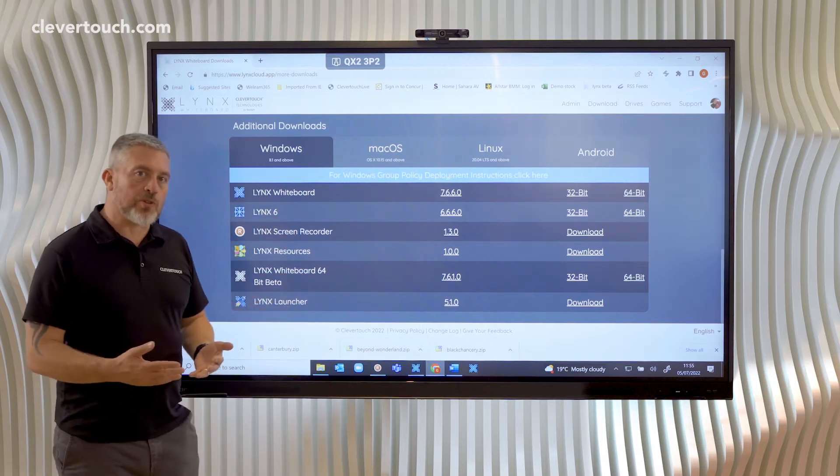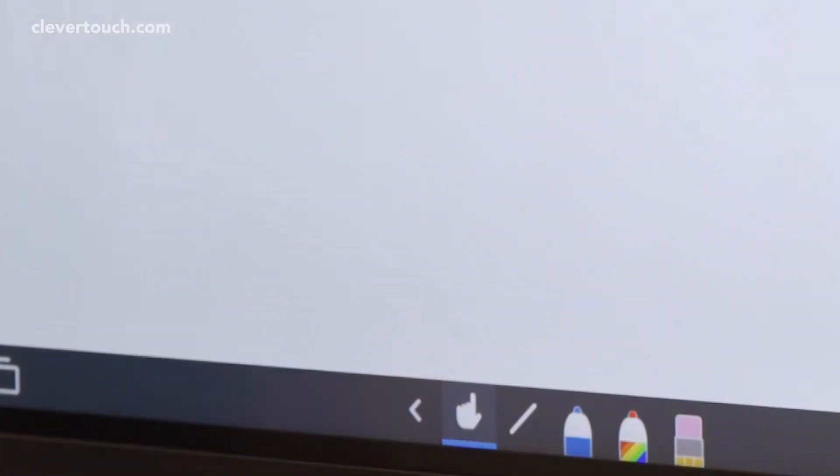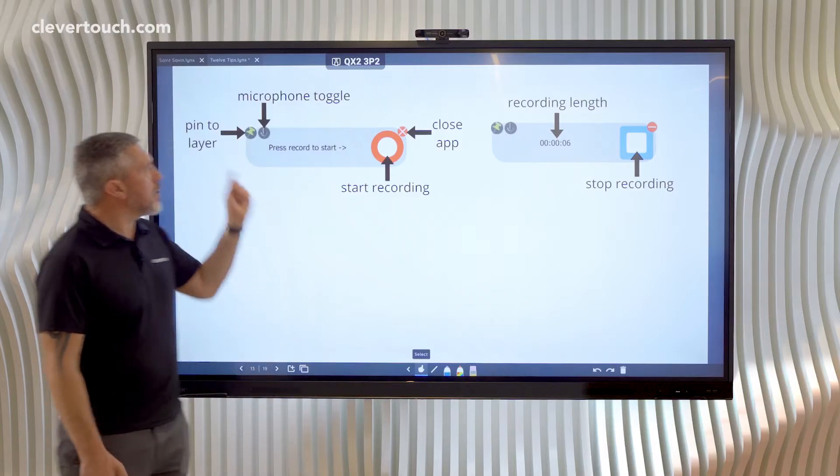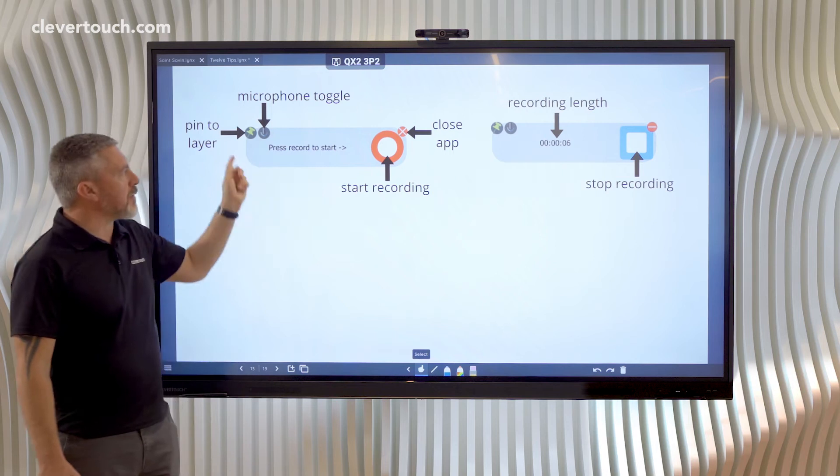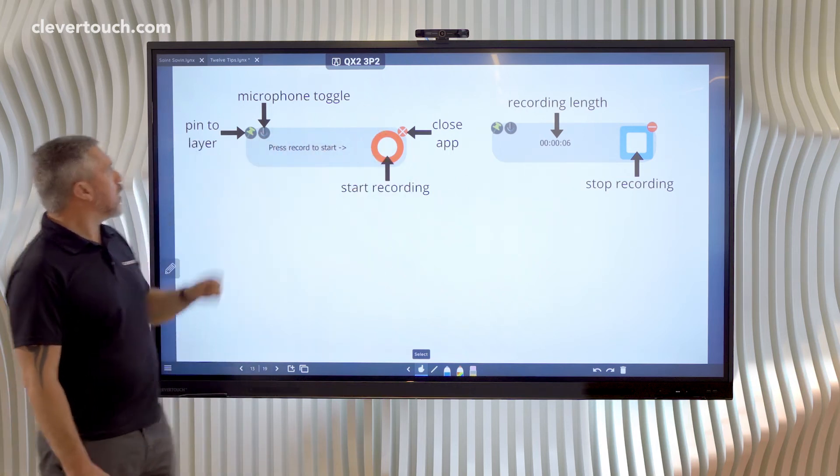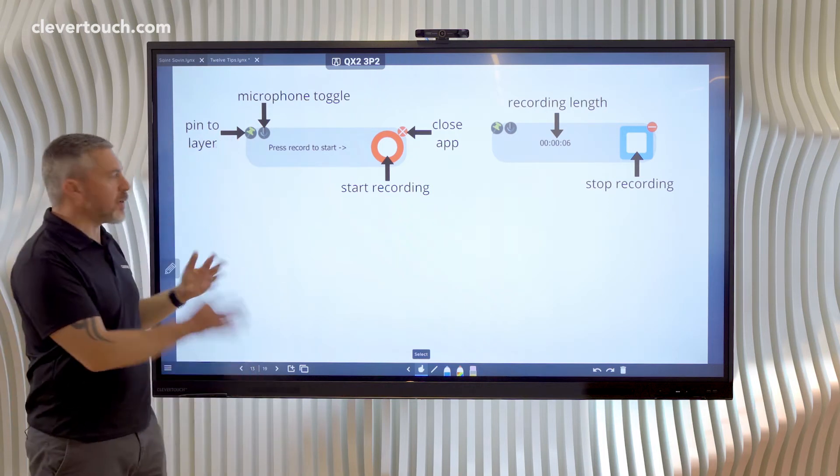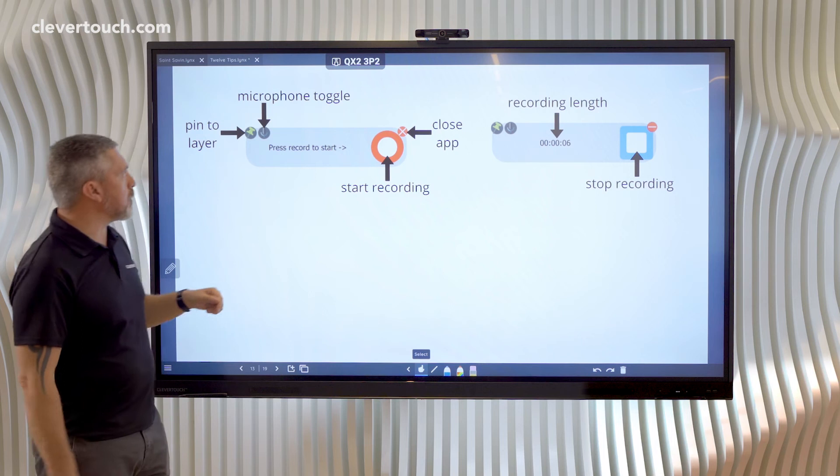When you download it, I'll show you what it looks like when it opens up. This is what you see when you activate it, and you can move it around the screen anywhere you like. You can also pin it to the desktop layer so that it's out of sight when you're recording something.